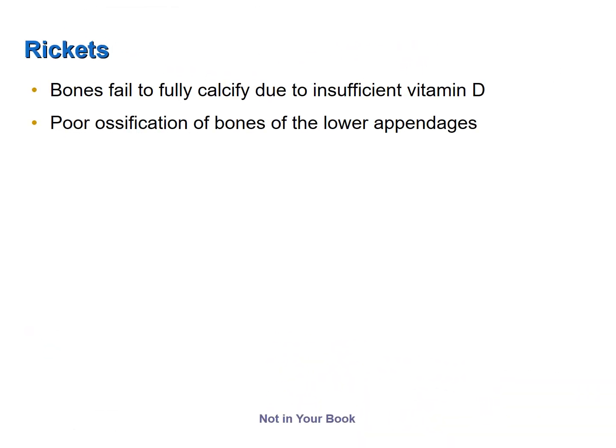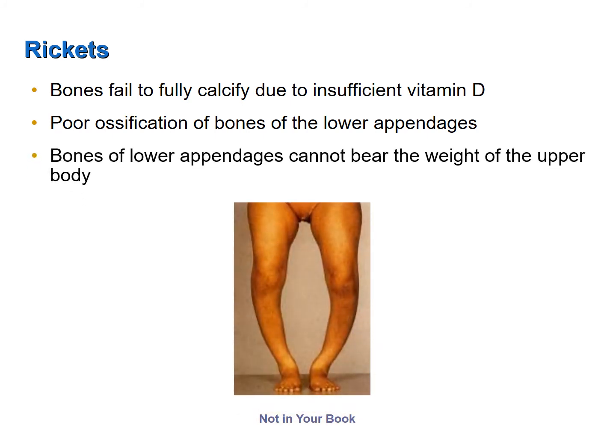Rickets is a disease in children where the bones fail to fully calcify due to insufficient vitamin D. In some cases rickets can result from a calcium deficiency, but more likely it is a vitamin D deficiency. Calcium absorption from the intestinal tract is very dependent on vitamin D — even if one consumes enough calcium, a vitamin D deficiency means one will not be able to absorb that calcium. This results in poor ossification of bones of the lower appendages, which cannot bear the weight of the upper body and take on a bowing conformation as shown in the figure.